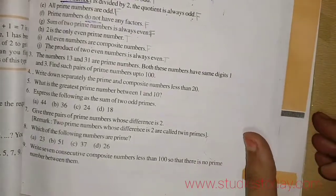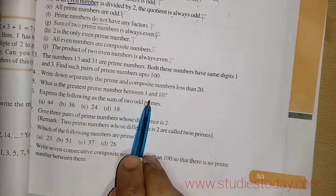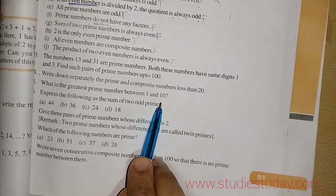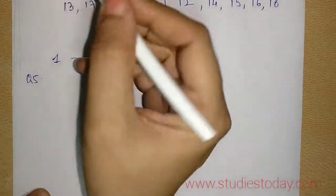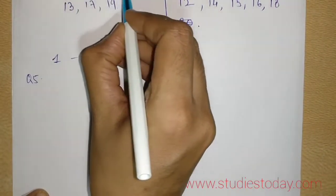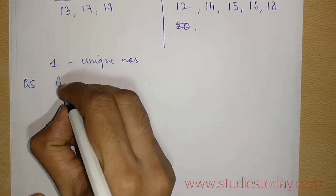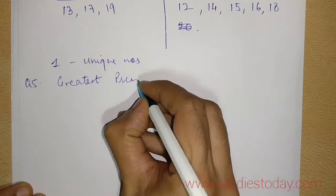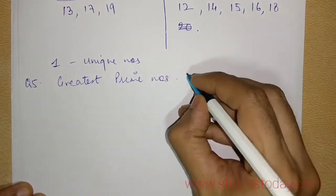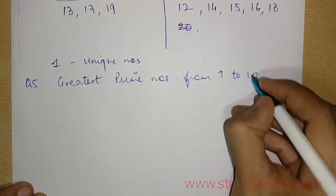Now we move to the next question, that is question number 5, which says what is the greatest prime number between 1 and 10? Can I see it from the last category? Prime numbers from 1 and 10 will be this.